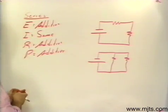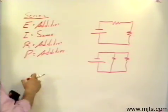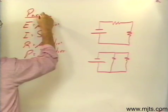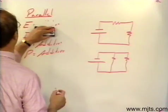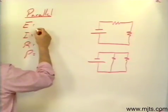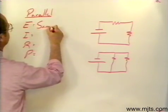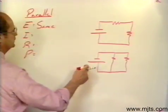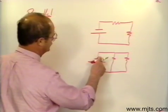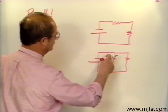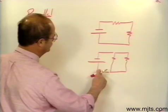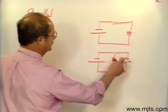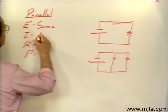For a parallel circuit, the voltage across each of the components is going to be the same. The current in each one of the branches is additive. If I want to know the total current in that circuit — from the point where it first parallels off — I add the current in those branches to get the total. So current is additive in a parallel circuit.